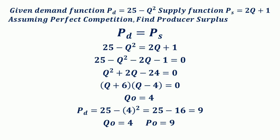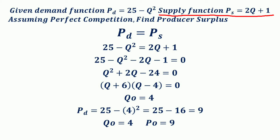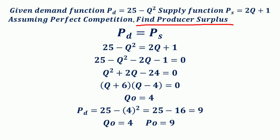Consider another numerical example. Here, the demand function and supply functions are given: the demand function PD = 25 − Q² and the supply function PS = 2Q + 1. We assume a perfectly competitive market and want to find the producer surplus.